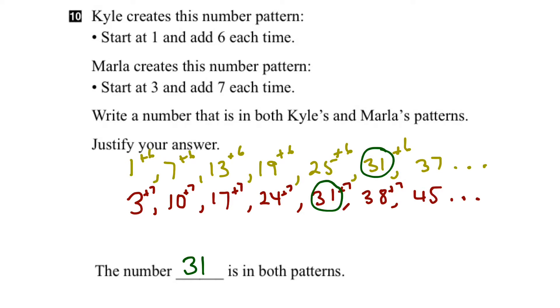Now we could also extend this problem and ask ourselves, is there another number that's in both Kyle's and Marla's patterns? Well, if you kept going, you'll find that 73 is the next number that's in both Kyle's and Marla's patterns. And there you go. Thank you.